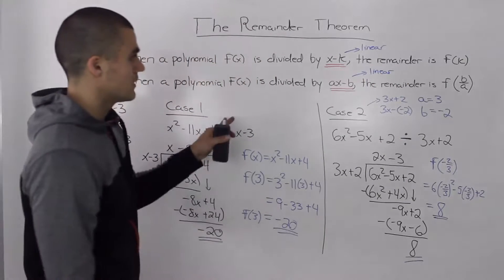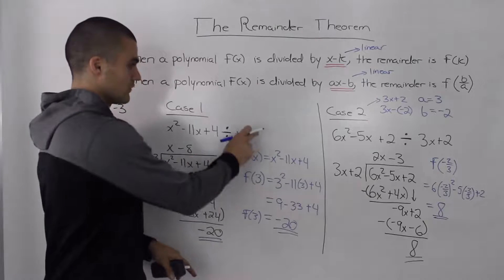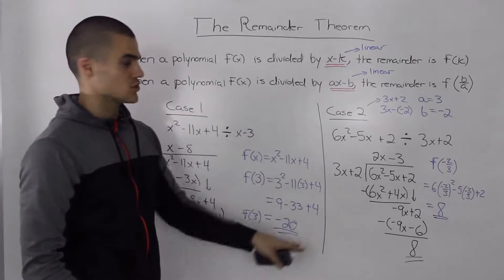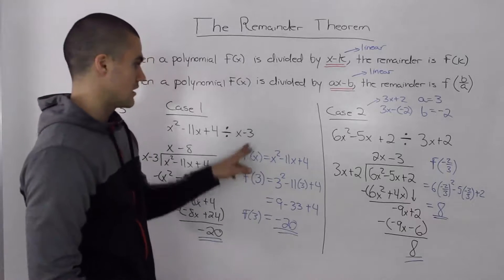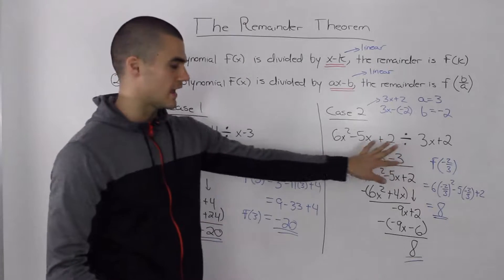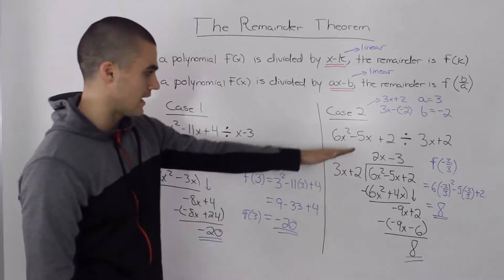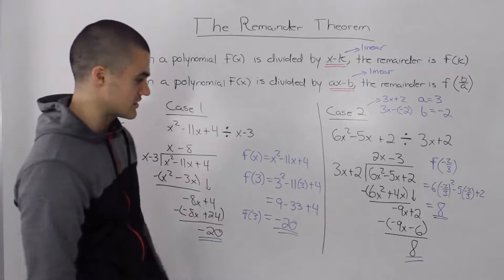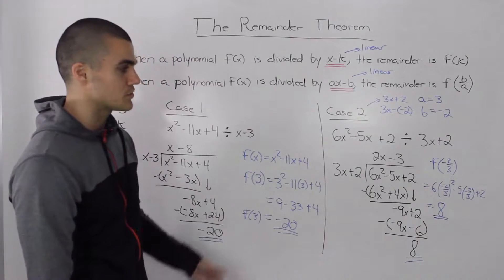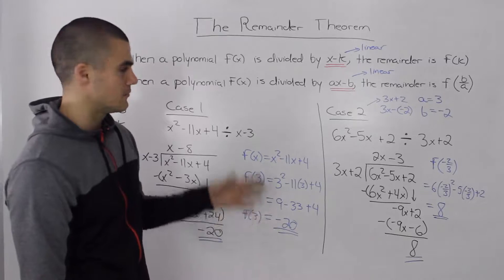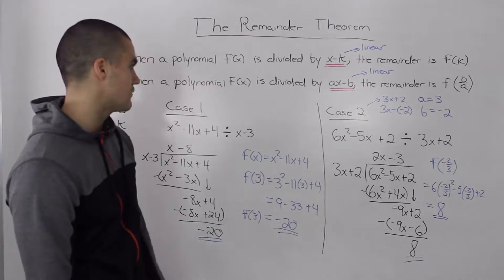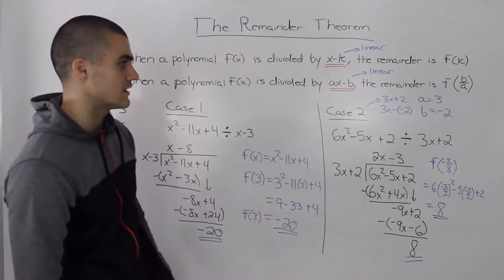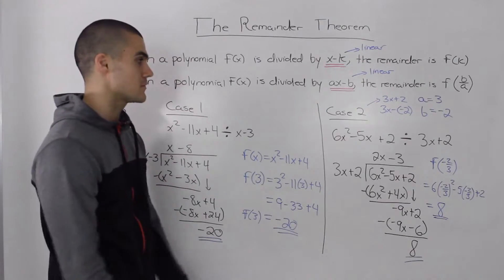And it's also a great way to check whether when your divisors are linear, whether you're doing your division correctly. So on a test, if you get a divisor that has a degree of 1, and you have extra time, and you're asked to do either long division or synthetic division, you get some kind of remainder, you can always check your answer quickly by using the remainder theorem. Just plug in the k value or the b over a value into the dividend and see if you get the same answer.